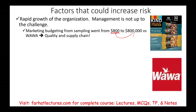By contrast, Wawa convenience stores are very careful in expanding — they want to make sure they don't sacrifice quality and that their supply chain is properly managed. They can supply their stores efficiently. Rapid growth, however, is a significant risk factor for financial reporting.